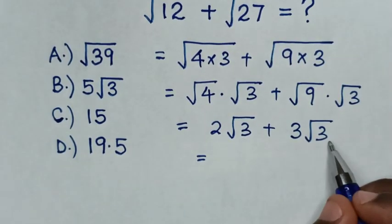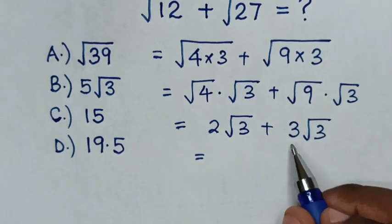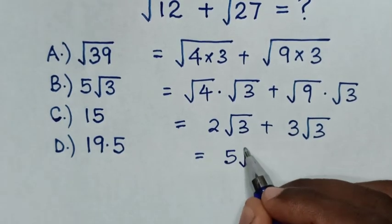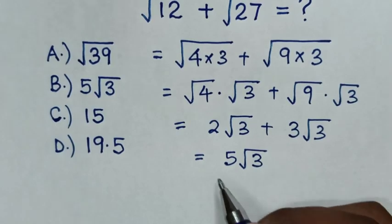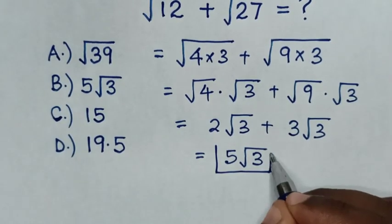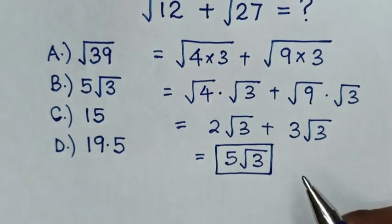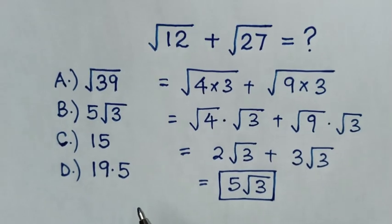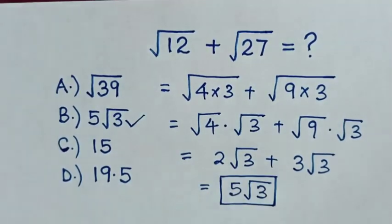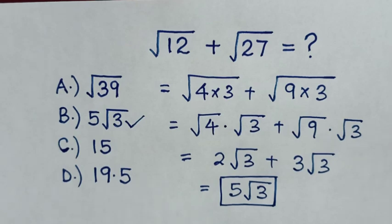Then it will be equal to, square root of 3 is common, so we'll add 2 plus 3 is 5 square root of 3. So this is our final answer to select in the multiple choice, it is B. Thank you.